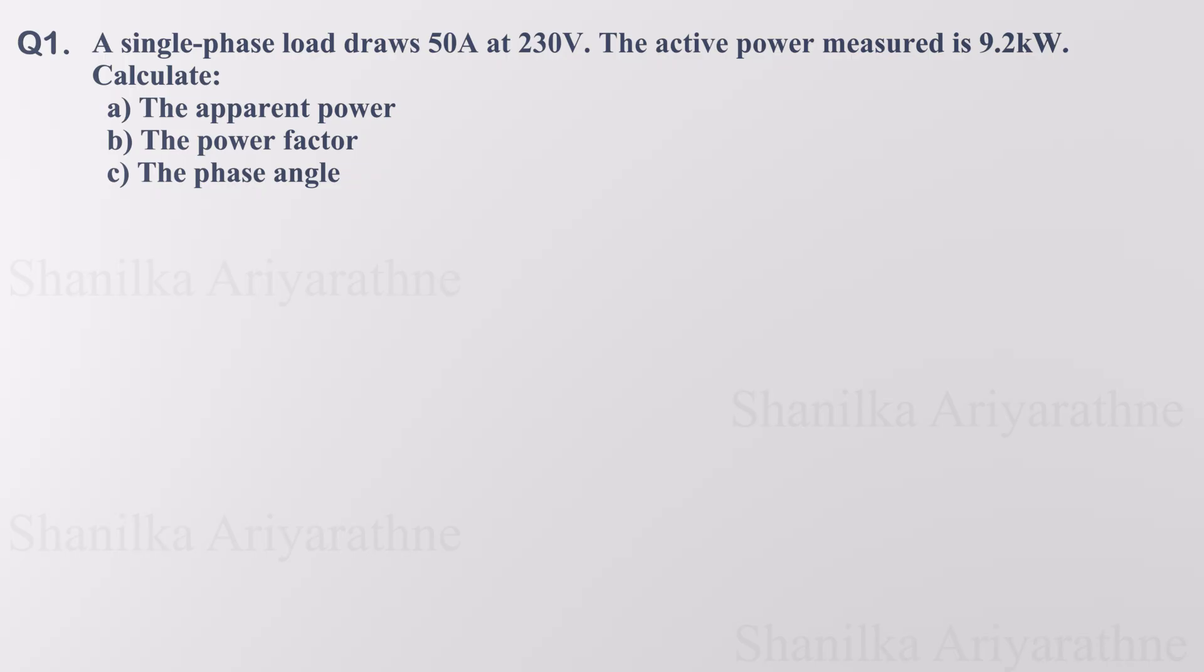the apparent power, power factor, and phase angle. Let's start by organizing our known values. Current is 50 amperes, voltage is 230 volts, and active power is 9.2 kilowatts.